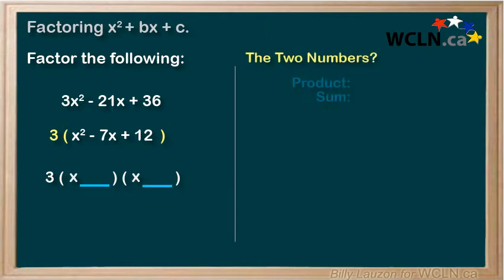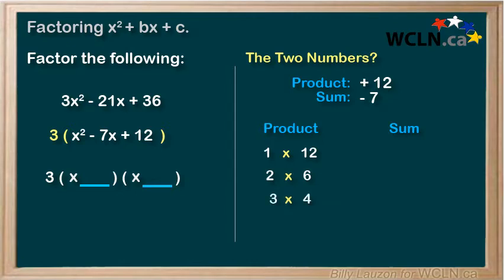We're looking for two numbers whose product is 12, the end term, and whose sum is -7, the middle term. We can make a list of the products that will give us 12. We have 1 times 12, 2 times 6, and 3 times 4. All three of these will definitely multiply to 12, but they will not all add to 7. So let's take a look at the potential sums we can make with these pairs of products. 1 and 12 could give us a number as low as 11 or as high as 13. 2 and 6 could give us a low number as 4 and high as 8. And 3 and 4 could give us 1 or 7. We're definitely looking for a 7, so we know our numbers are 3 and 4.